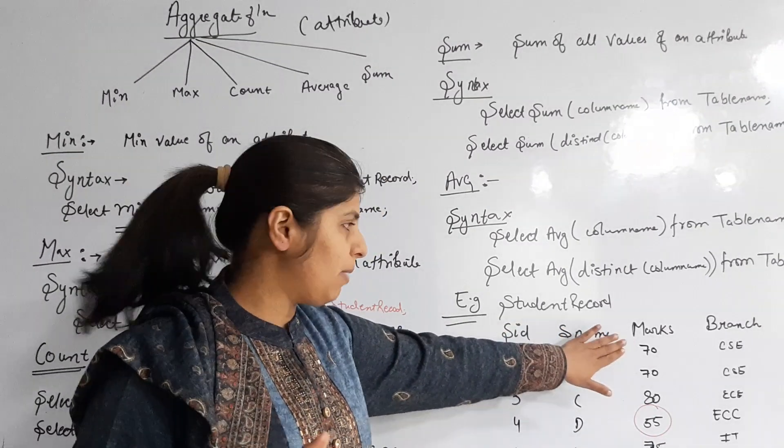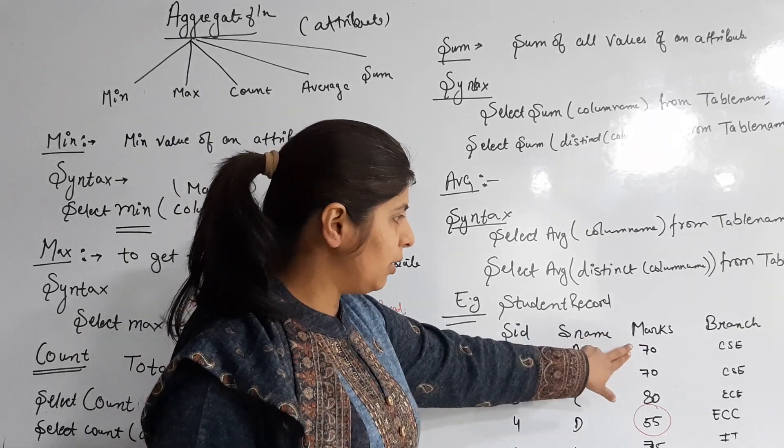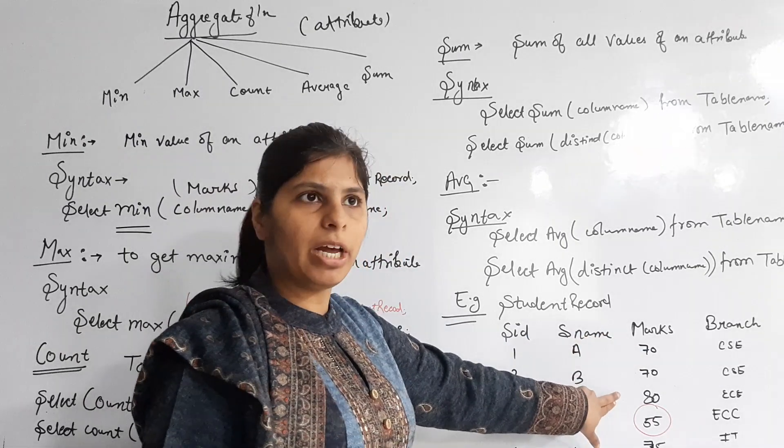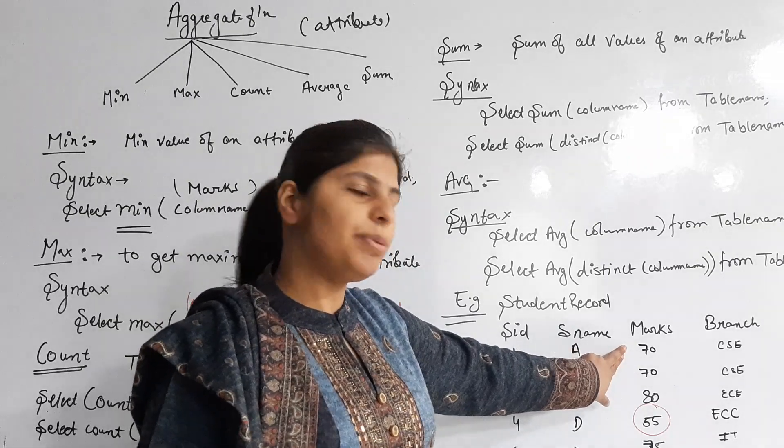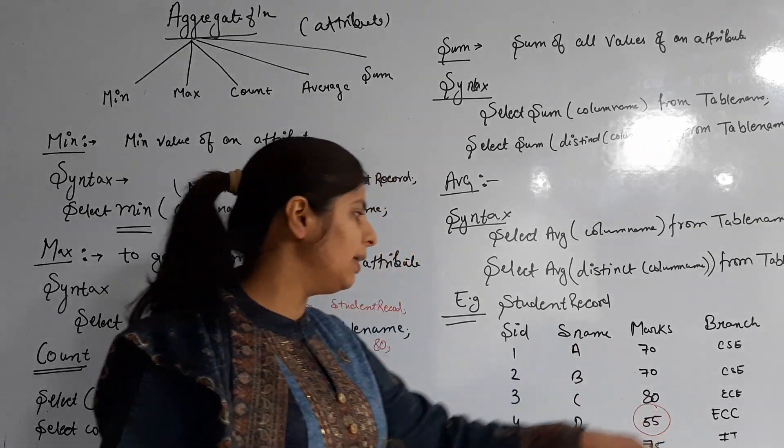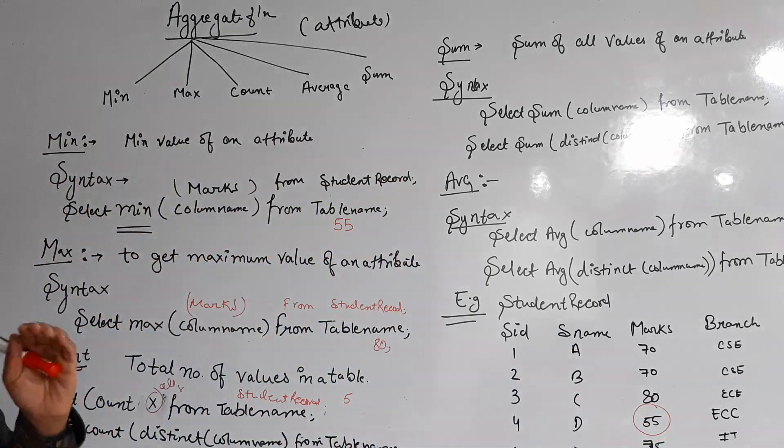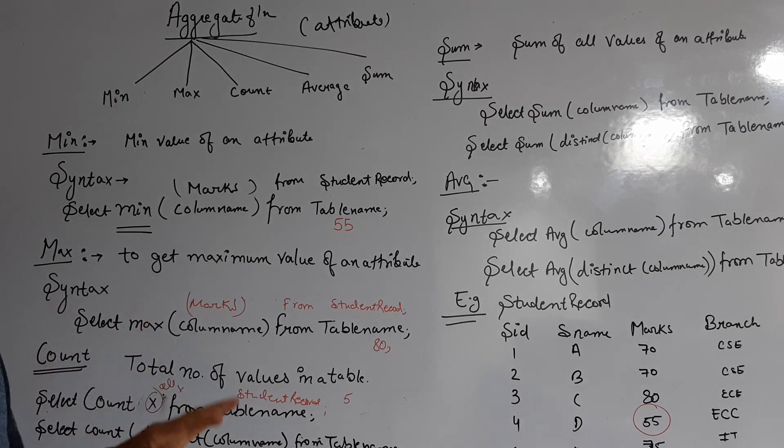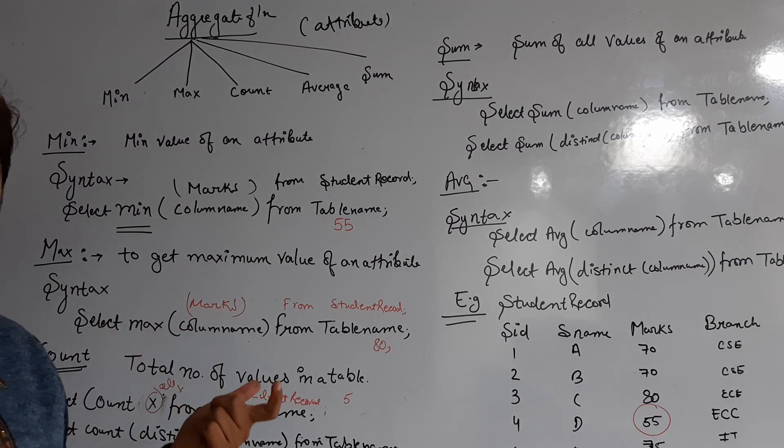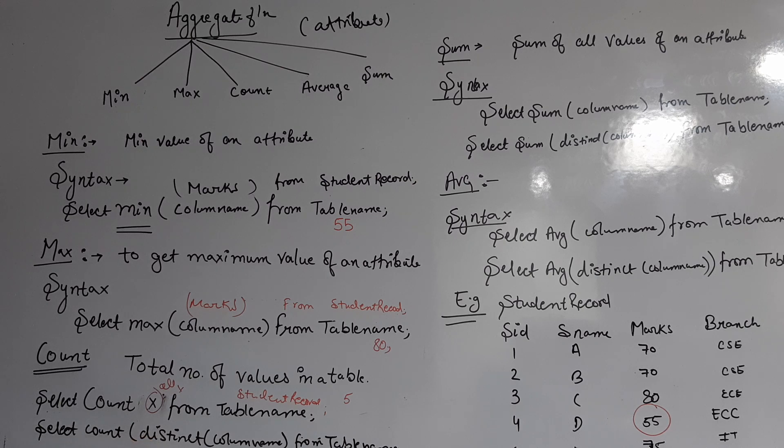In this marks table, you will observe there are repeated values. Roll number one and roll number two both have 70 marks. Now I need to remove duplicate values. In SQL we have a word known as the DISTINCT keyword. For removing duplication, we use the word DISTINCT.